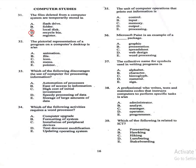Question 32: The pictorial representation of a program on a computer's desktop is called — A: animation, B: file, C: icon, D: menu, E: pointer. The correct answer is C, icon. Icons represent programs or files visually on the desktop.